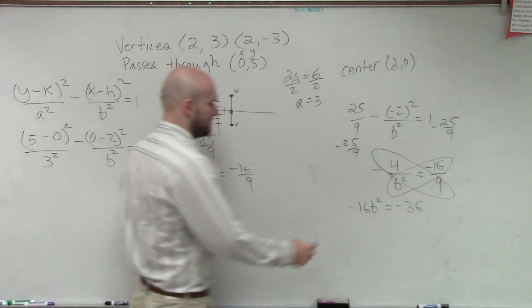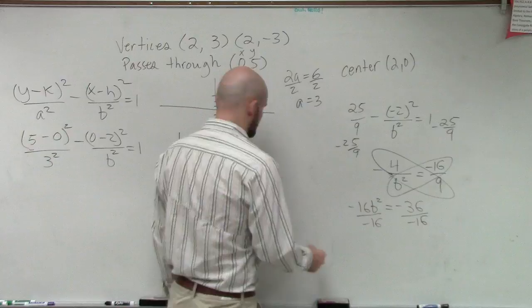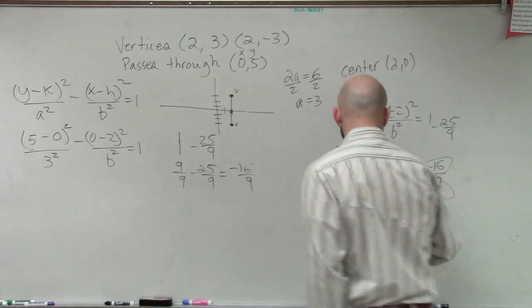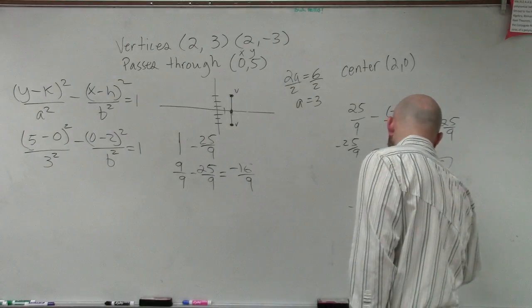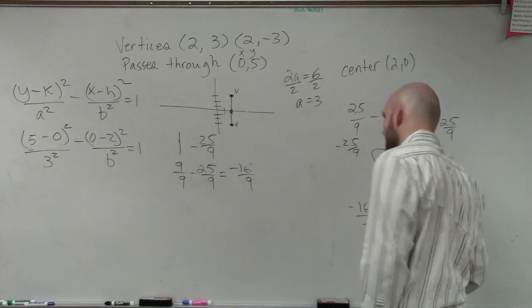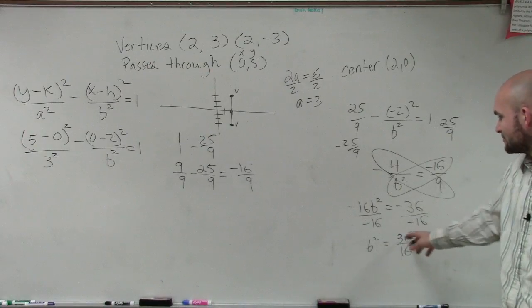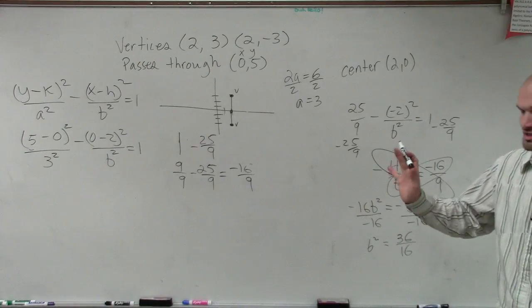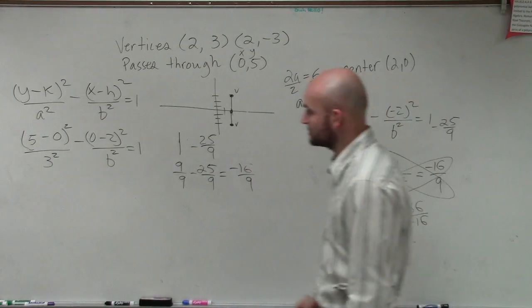So therefore when I cross multiply, I have -16b² = -36. Divide by -16 and I get b² = 36/16. Now you might say, oh, let's reduce that. But hold on. Before you reduce it, we can just figure out that b² equals 36/16. So that's good. We don't need to simplify. We don't need to reduce it. So let's just leave it as 36/16.